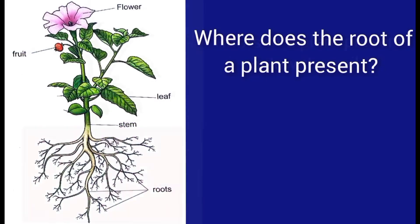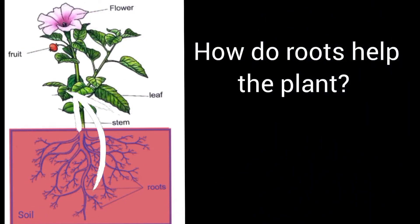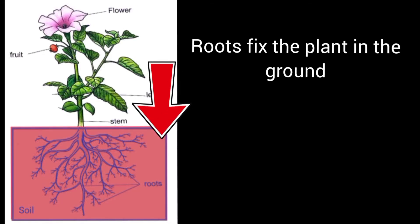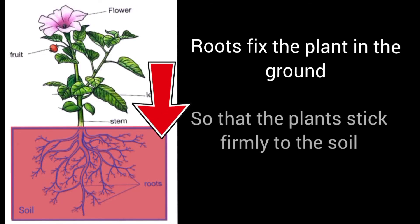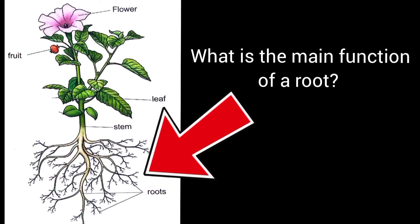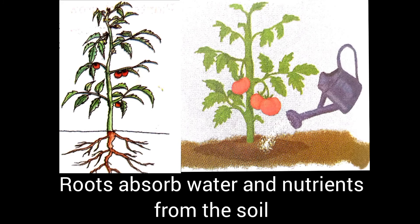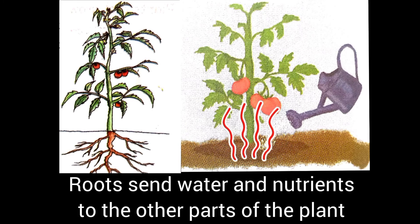Then children, how do roots help the plant? Roots fix the plant in the ground so that the plants stick firmly to the soil. Then children, what is the main function of a root? Yes, roots absorb water and nutrients from the soil and they send these water and nutrients to the other parts of the plant.